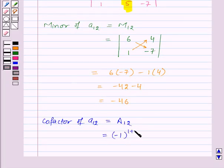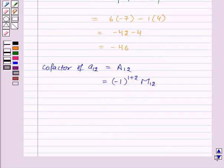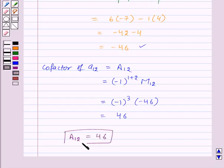Now, the cofactor of the element A12 will be equal to minus 1 raised to the power 1 plus 2 into M12, which will be equal to minus 1 raised to the power 3 into minus 46. This will be equal to 46. Thus, the cofactor of the element A12 is 46. This is the required answer to this question.